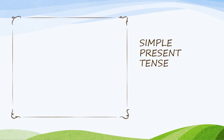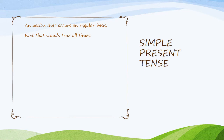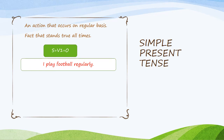Now we can study simple present tense. An action that occurs on a regular basis, or a fact that stands true at all times. For example: I play football regularly — that is simple present tense. Also: sun rises in the east — that is a true fact, a true case.